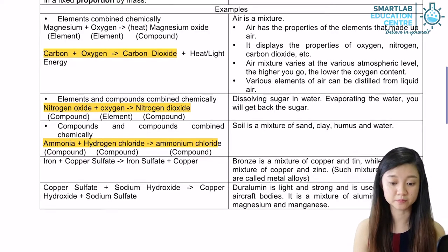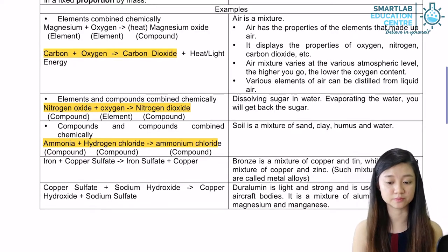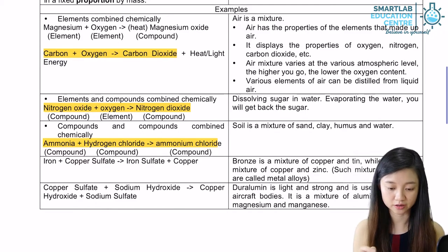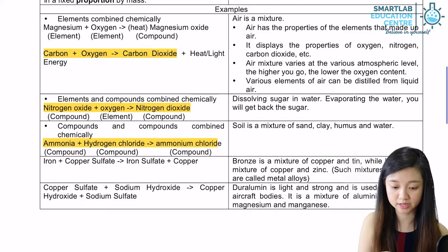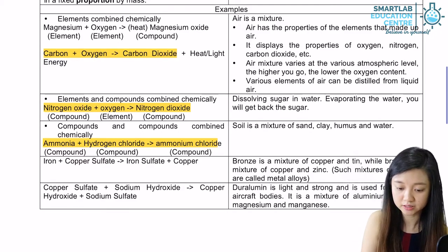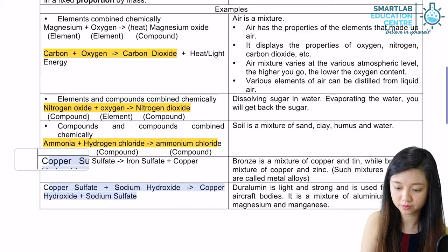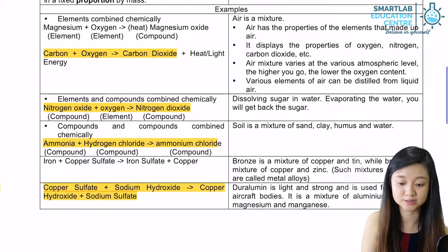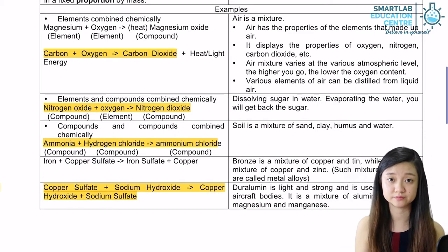When iron and copper sulfate combine, it forms iron sulfate and copper. And lastly, when copper sulfate and sodium hydroxide combine, they will form copper(II) hydroxide and sodium sulfate.